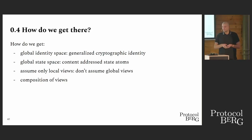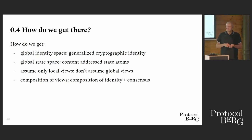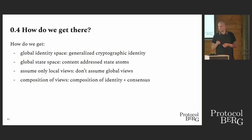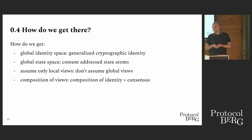How do we assume local views? We don't assume global views — easy. Composition of views, though, is a bit harder. For this, we need composition of identity, so the generalized notion of identity we are building needs to be composable in some sense. And we need consensus that is ideally also composable.